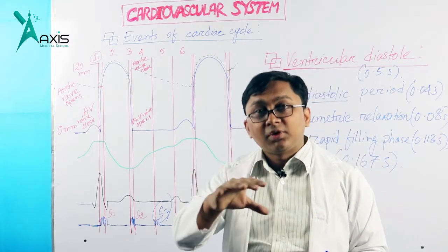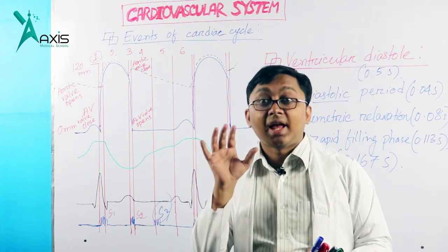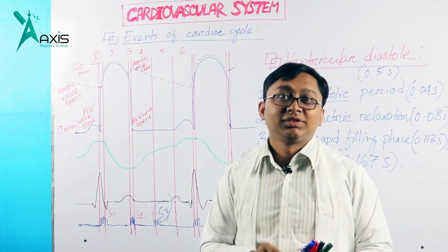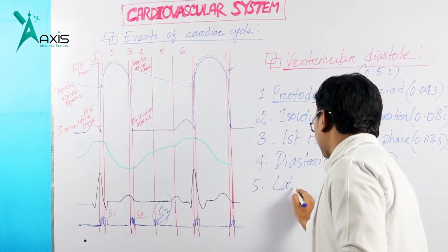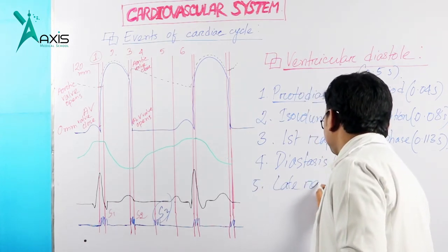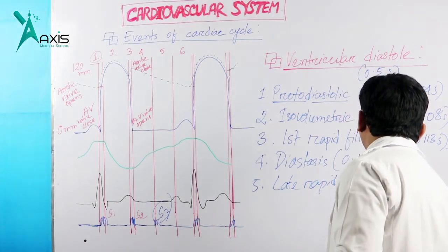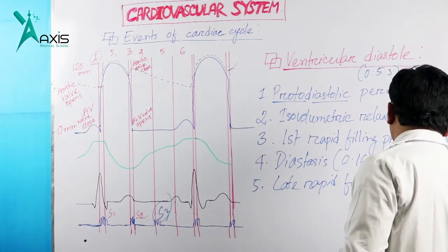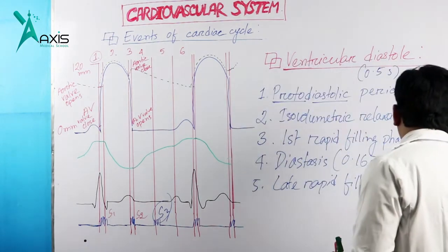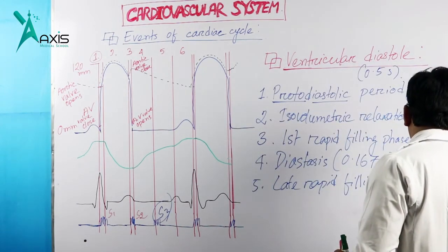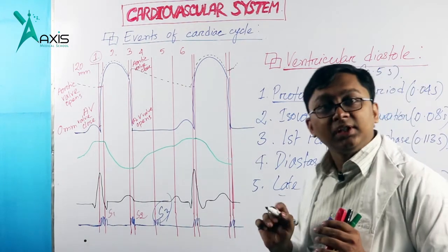Blood also passes passively due to gravity from the atrium to the ventricle. So the sequence is: first rapid filling, then diastasis (passive filling), and then after passive filling, the atrium actively contracts. This is called the late rapid filling phase, lasting approximately 0.1 seconds.